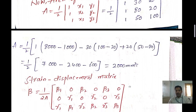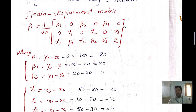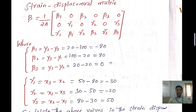Next we need to write down the strain-displacement matrix B. The formula is B equal to 1 over 2A, with entries beta1, beta2, beta3 in the first row; 0, gamma1, 0, gamma2, 0, gamma3 in the second row; and gamma1, beta1, gamma2, beta2, gamma3, beta3 in the third row.